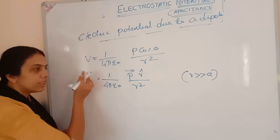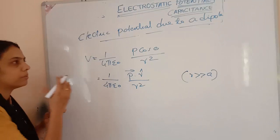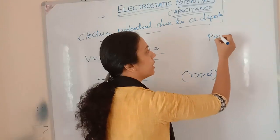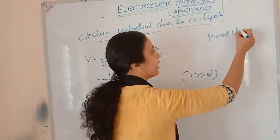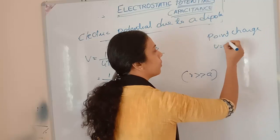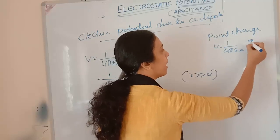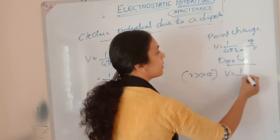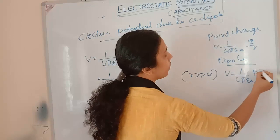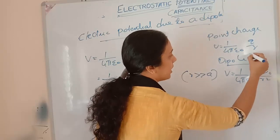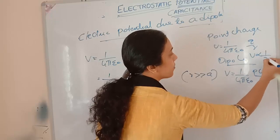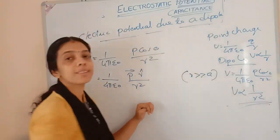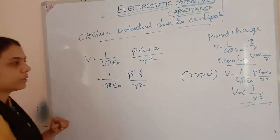There is important physical significance to understand here. For a point charge, V equals (1/4πε₀)(q/r), so V is inversely proportional to r. But for a dipole, V equals (1/4πε₀)(p cosθ / r²), so V is inversely proportional to r². That is an important distinction.